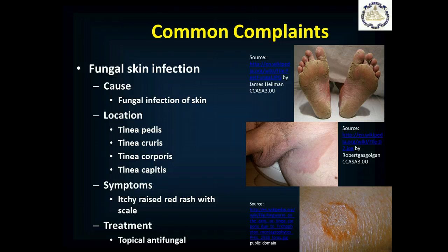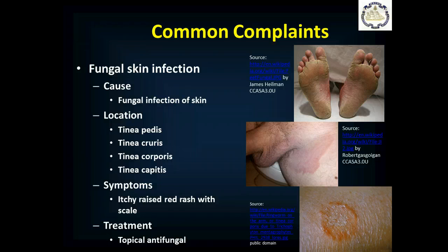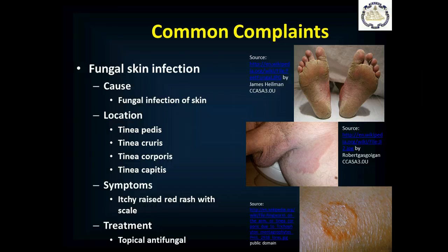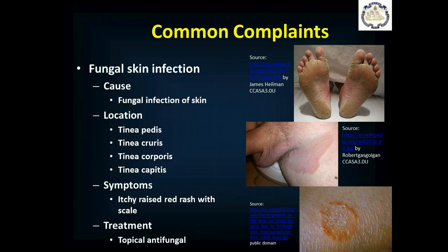Fungal skin infections are very common. You can get tinea pedis, which is athlete's foot — seen in the top image. Tinea cruris, or jock itch — cruris means groin — seen in the middle image in that intertriginous contact area. Tinea corporis, or ringworm — seen on the bottom. Tinea capitis, usually seen in kids but adults can get it — a fungal infection over the scalp. You get an itchy, raised red rash with a white scale on it. Treatment is a topical antifungal, and if it's really itchy, consider diphenhydramine to help with the itch.